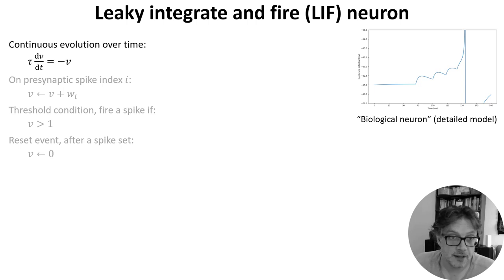We can model this decay by treating the membrane as a capacitor in an electrical circuit. Turning this into a differential equation, V evolves over time according to the differential equation tau dV by dt is minus V.